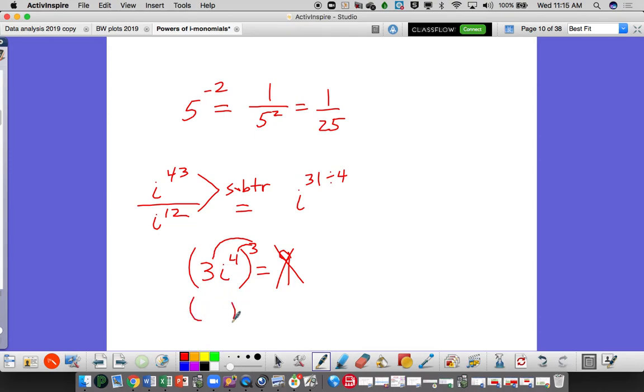So it's literally, if I wanted to write it out, I could. I could do 3i to the 4th, 3i to the 4th, and 3i to the 4th. And then I'd have 3 times 3 times 3, which is 27. And I'd add up these 4s, and I'd get 12. So what I want to tell you is raise the coefficient to this power, but multiply any exponents.